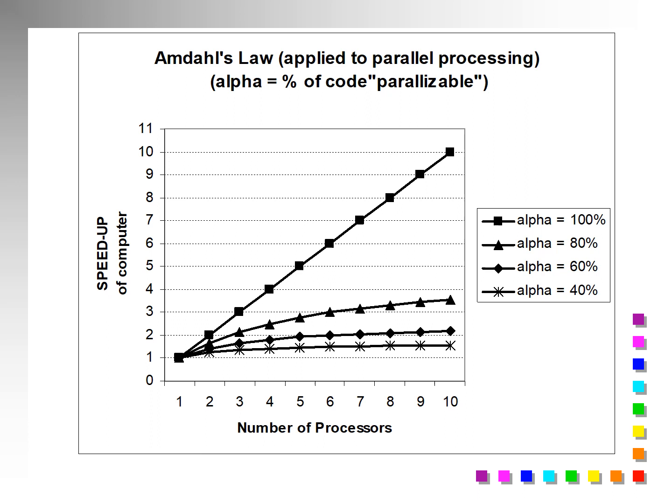You can apply the same principle to the number of processors. This is the same example, but it's showing that the number of processors is not going to give you a double speed up unless you have 100% — alpha equals 100% — where you're utilizing both of them, which we'll see in other courses that it's impossible really to get that because you have inter-processor communication.